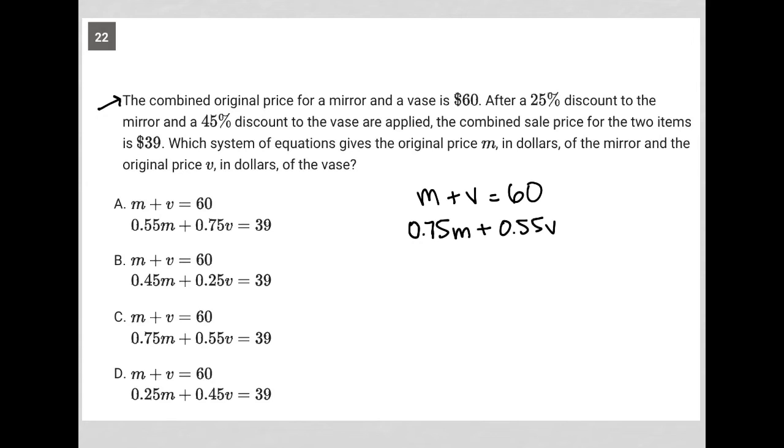And altogether, we know that equals $39. Which system of equations gives the original price M in dollars of the mirror and the original price V in dollars of the vase?